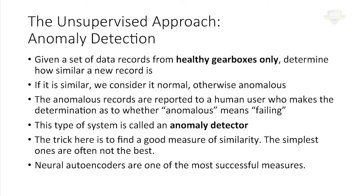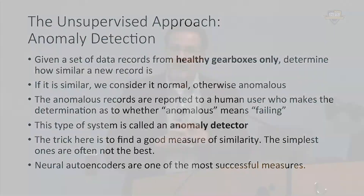The trick here is to find a good measure of similarity. There are all kinds of measures you can come up with — sometimes the simple ones are great, but often they're not the best. The one I want to talk about is one of the more complicated ones, which uses a neural network called a neural autoencoder. It's one of the most successful measures and what we used for this particular data.